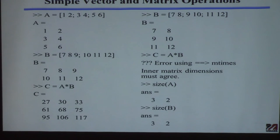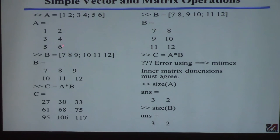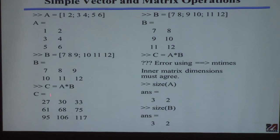For matrix multiplication, the dimensions must be compatible. If A has three rows and two columns, then B must have two rows — matching A's number of columns. B can have as many columns as you want. Then the command A*B gives you matrix C, which in this case is three-by-three. This is obviously much easier than doing it by hand, especially for 10-by-10 matrices.